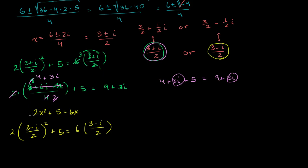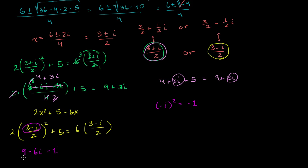3 minus i squared equals 3 minus i times 3 minus i. That gives 9, then 3 times negative i is negative 3i — and we get two of those, so negative 6i — then negative i squared, which is also negative 1. So 3 minus i squared equals 9 minus 6i minus 1.